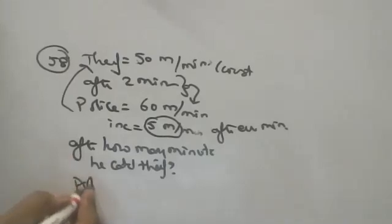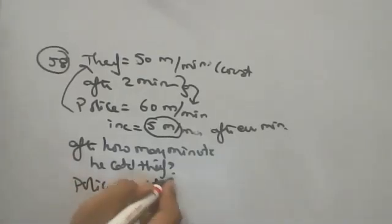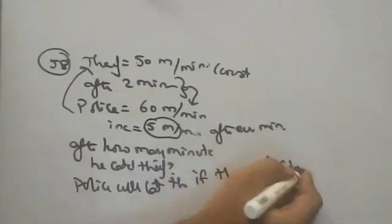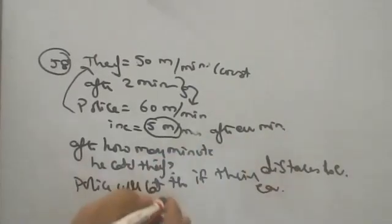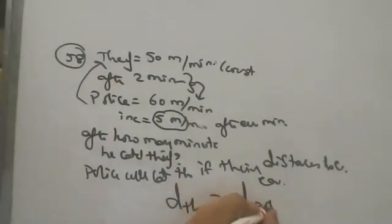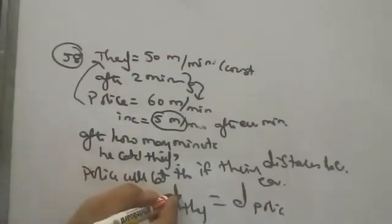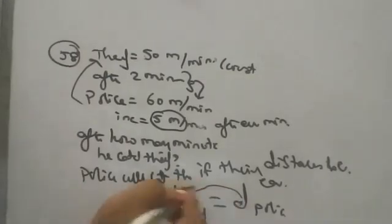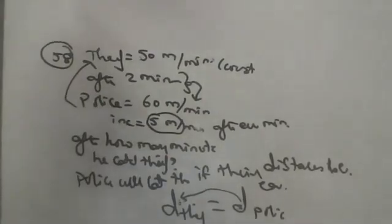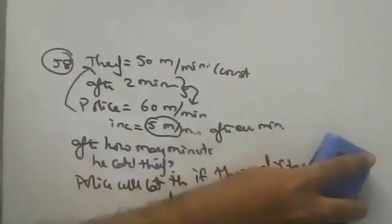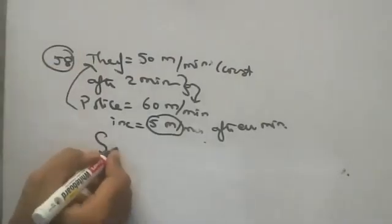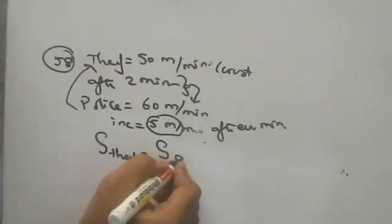Simple logic, children: police will catch the thief if their distances become equal. The total distance ran by the thief should be equal to the total distance ran by the police — then only he can catch. So the total distance travelled by the thief should be equal to the total distance travelled by the police.